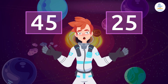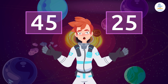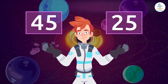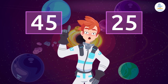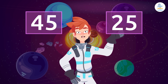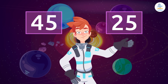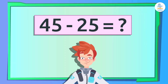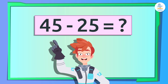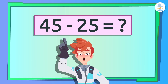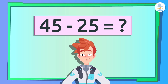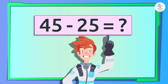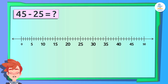There were 45 planets in this galaxy, but 25 disappeared into a black hole! How many planets are left? We have to subtract 45 minus 25, but we're going to do it in a different way than usual. We're going to use the number line.